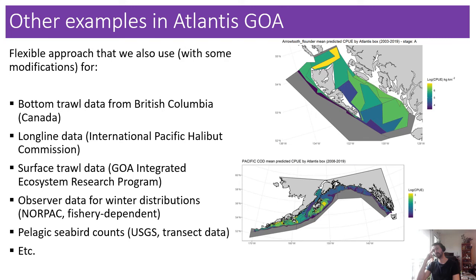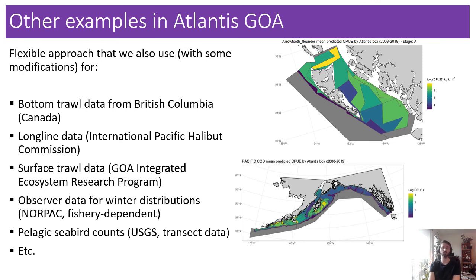It's a pretty flexible approach that we use with some variation for many datasets, including a separate bottom trawl dataset for British Columbia. We apply a similar approach for other data streams including longline data, surface trawl, and observer data for winter distributions — because as mentioned, a lot of this is based on summer distributions. For things like the S1 to S4 parameters, which are per quarter, you might want to bear in mind you're using the same distribution throughout the year, or use something else for other seasons if you have it.